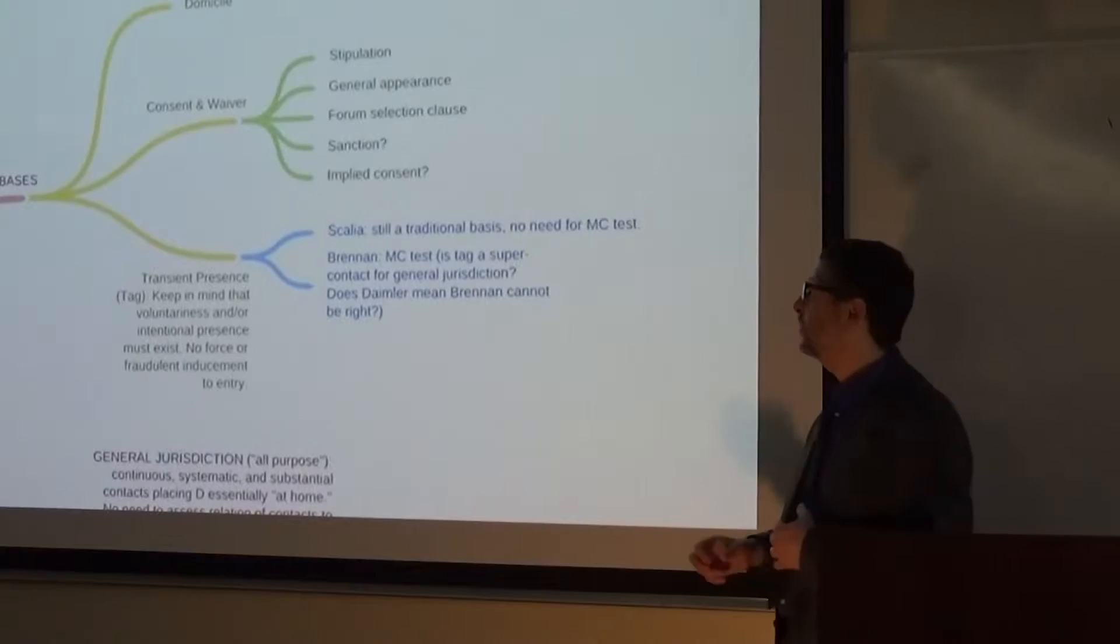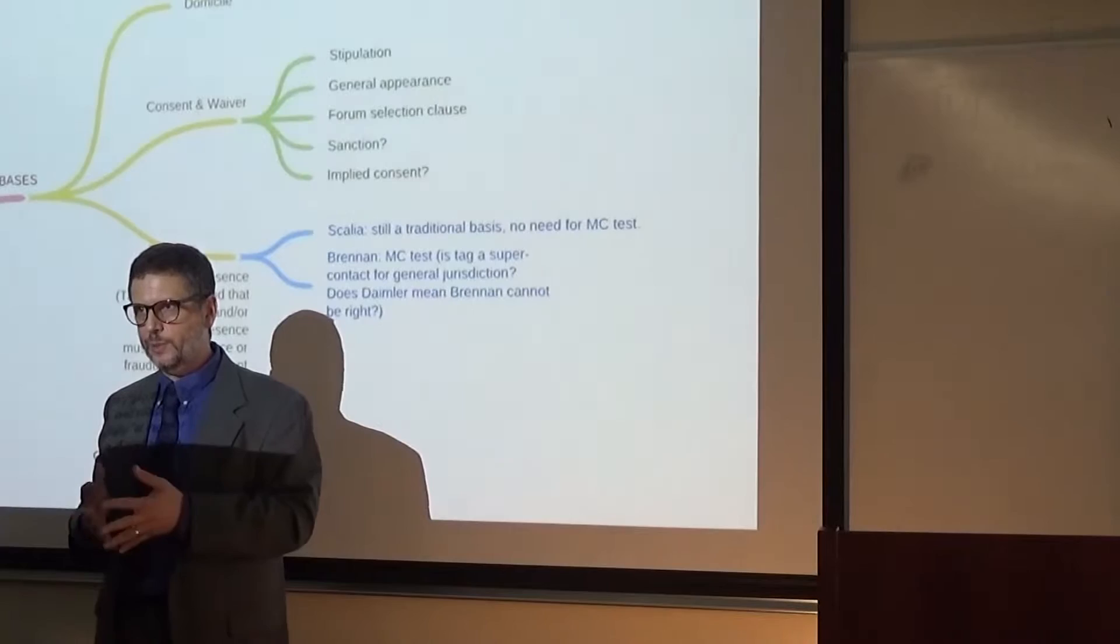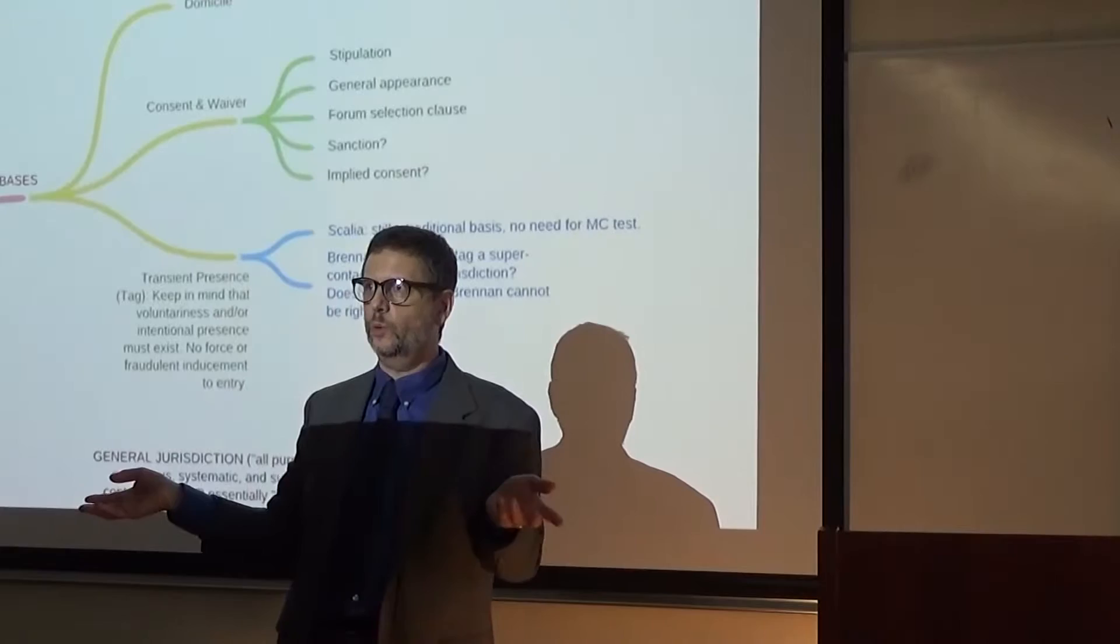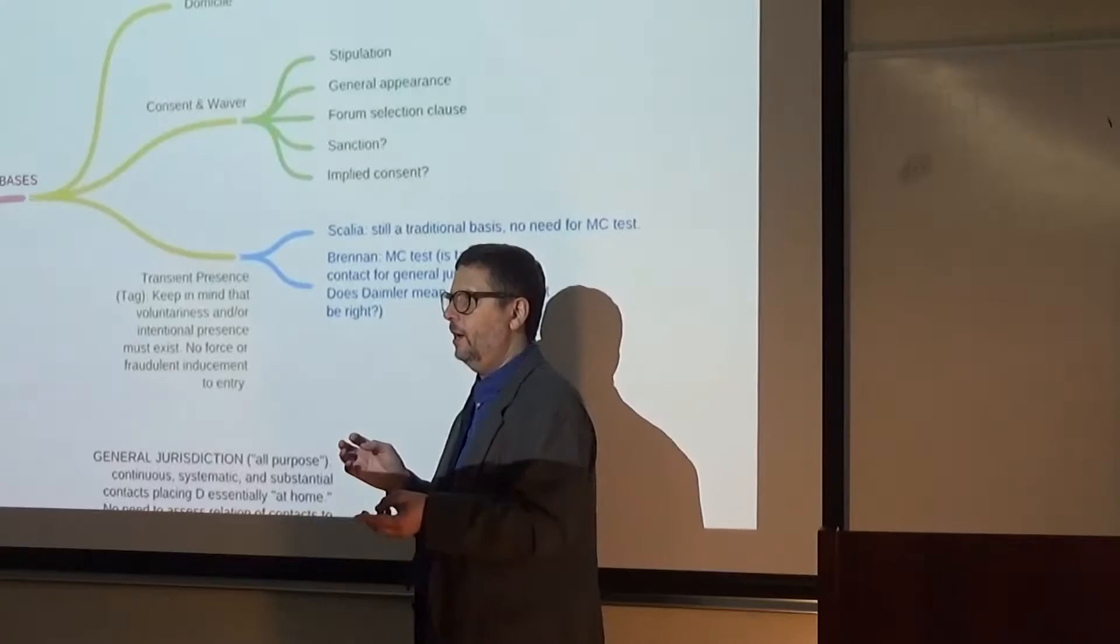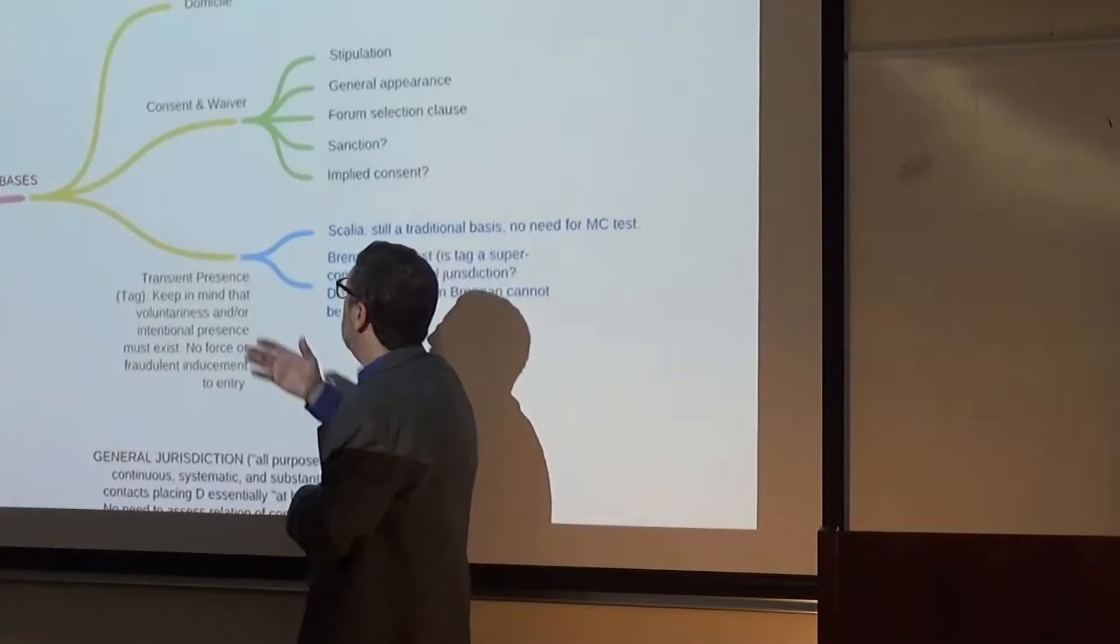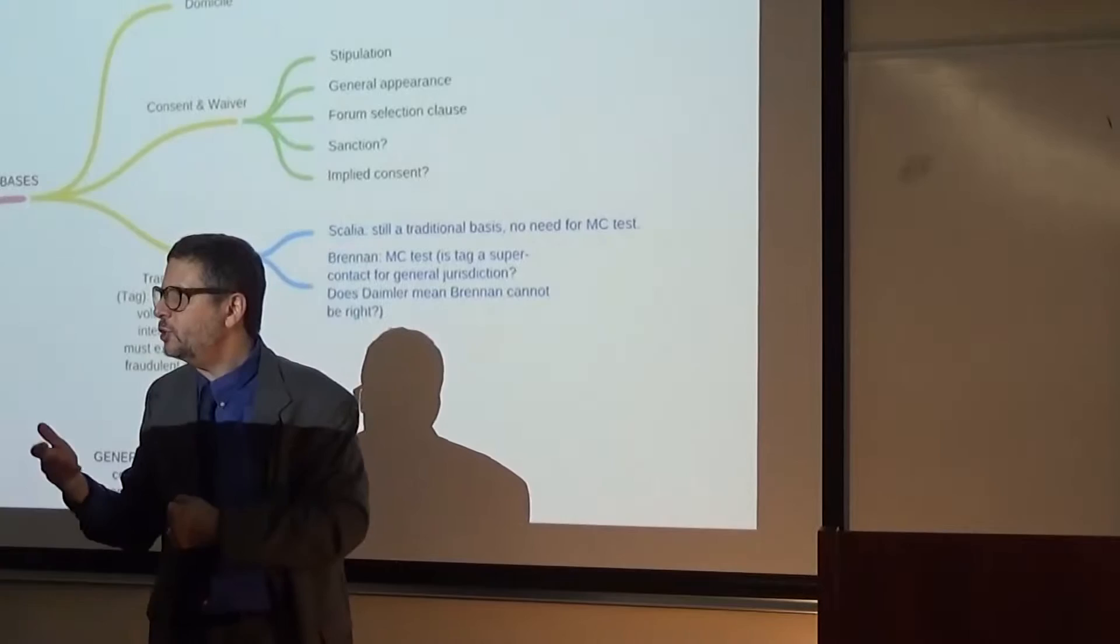The second step after you look at the long arm is to analyze 14th Amendment due process. That's referring to the prohibition on taking away somebody's life, liberty, or property without due process. And that can be satisfied through either traditional bases or the modern bases in the minimum contacts. Traditional bases, there's a whole bunch. For example, domicile, where somebody resides with the intent to remain indefinitely. Well, they're subject to P.J. in that place. It's their home. I'm domiciled in Florida, so I can be sued in Florida for anything. A car accident in Alaska, a bar fight in Brazil. I can be sued in Florida for all those things.